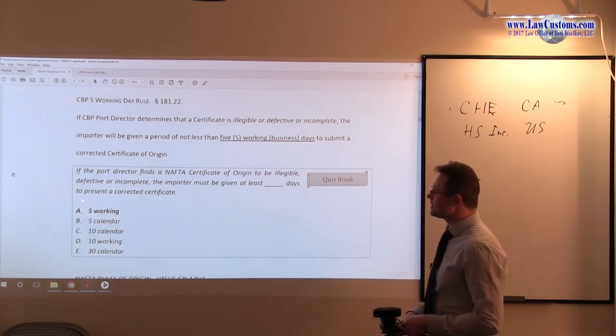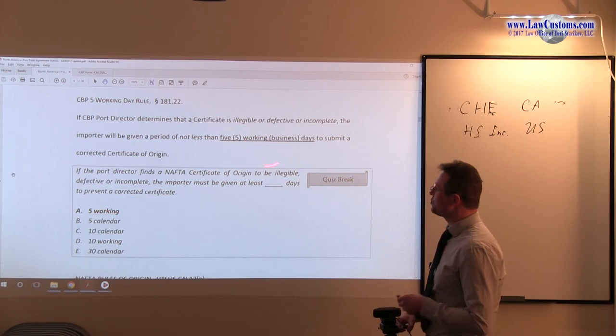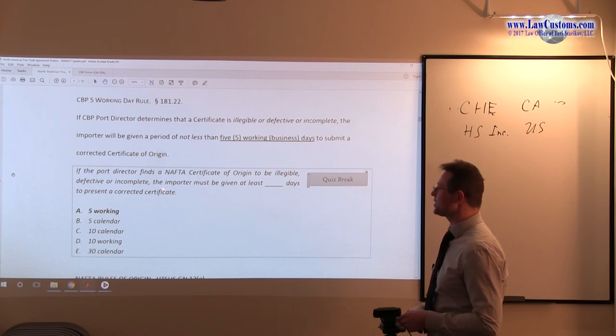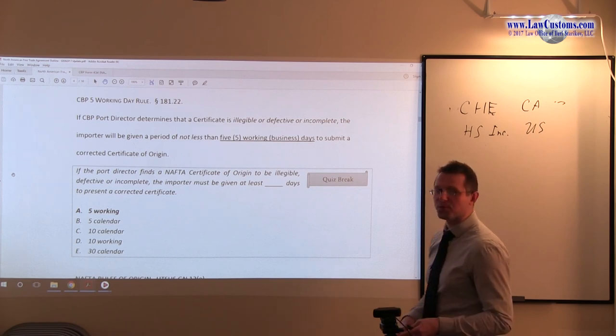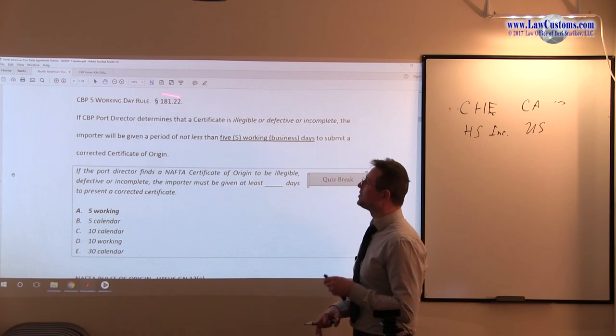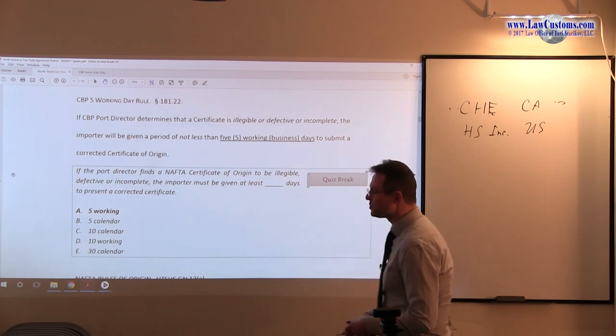And it pretty much goes straight to the point. How many days? If the port director finds a certificate of origin to be illegible, defective or incomplete, the importer must be given at least blank amount of days to present a correct certificate. Here, you just have to know this: five working day rule under Section 181.22.